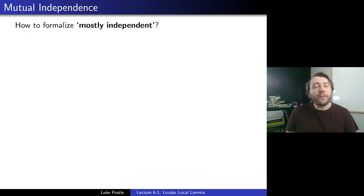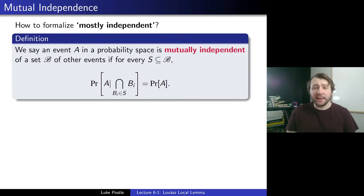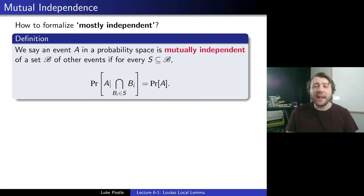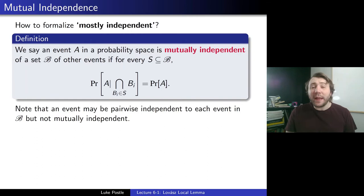So let's try to formalize this. How do you formalize being mostly independent? Well, there's a nice notion of mutual independence. We say an event A in a probability space is mutually independent of a set B of other events if, for every subset S of B, the probability of A conditioned on the events in S all happening is equal to the probability of A. So this means that no matter which events in B happen and which don't, the probability of A remains the same. It's mutual independence. We'll just note that an event may be pairwise independent to each event in B, but not mutually independent, so it's important to understand mutual independence as a generalization of pairwise — pairwise isn't enough to imply mutual independence.